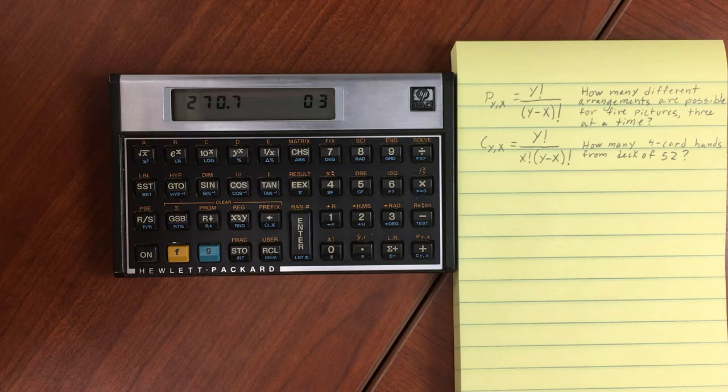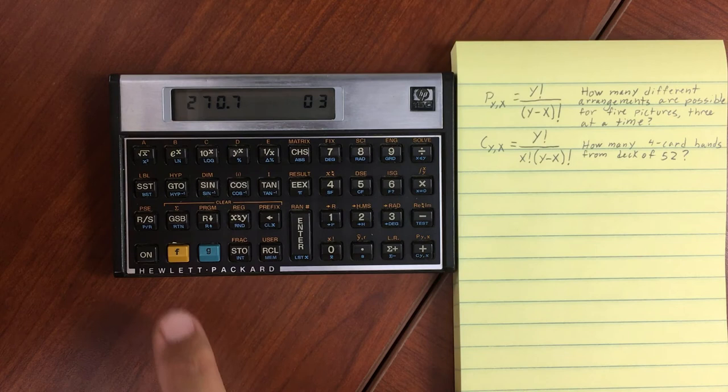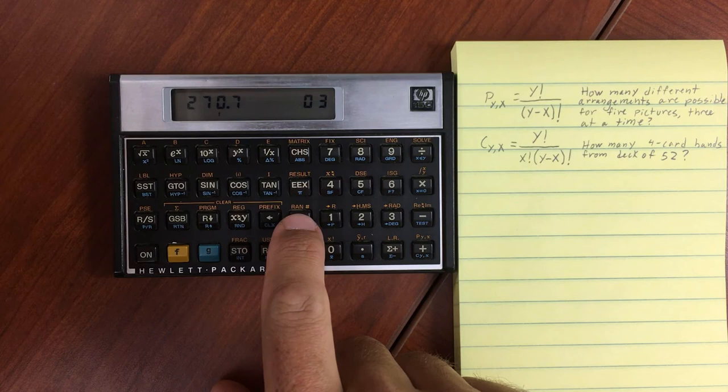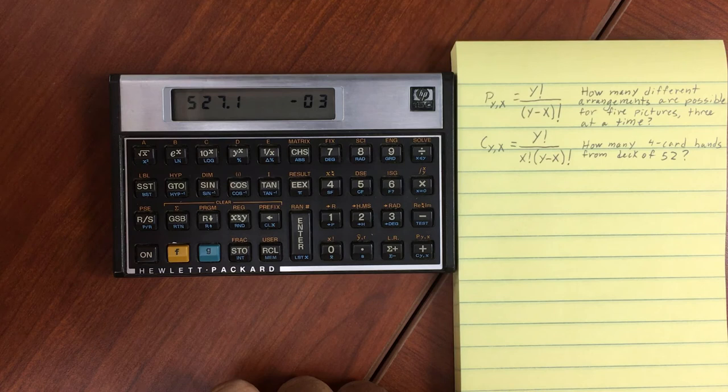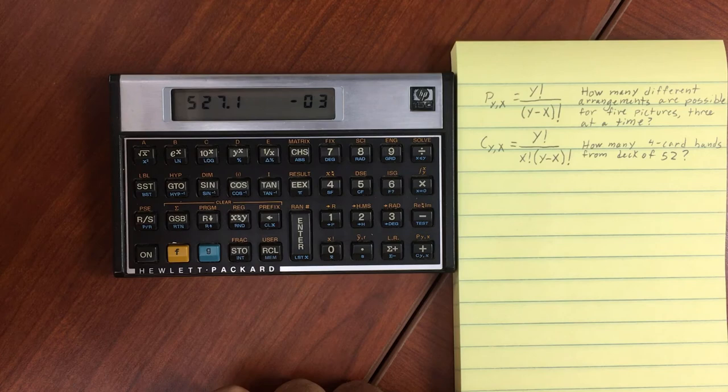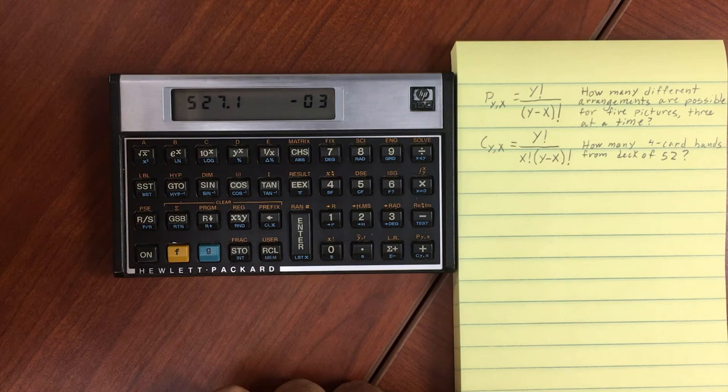One other thing that might be useful to know in probabilities is the random number generator. If you go ahead and push Gold Shift, and then above the Enter key, you'll see the Ran. This generates a number between 0 and 1. Of course, you can multiply it by 10 or 100 or whatever to get a different number, but it always generates some decimal number between 0 and 1.